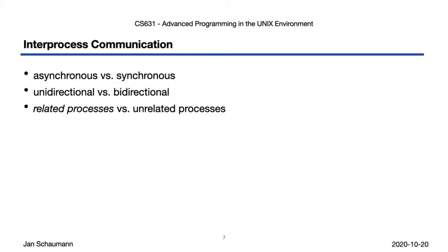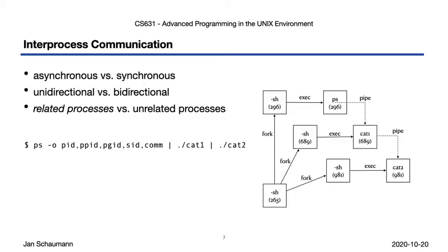Communications between processes may sometimes only be possible if the processes are related — that is, they share a common ancestor process. A typical shell pipeline shows that all processes executing are ultimately children of the initial shell process. The inter-process communications via the pipe are only possible because of this, and stand in contrast to signals, where any process may be able to deliver a signal to another process, provided they have the same effective UID.